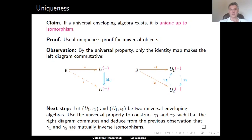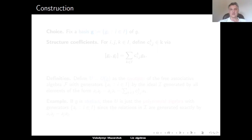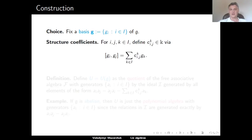Now we know that if a universal enveloping algebra exists, it must be unique. Let us construct a universal enveloping algebra of G. To do this, we need to choose a basis of G. When we have a basis, we can speak about the structure coefficients of the Lie bracket with respect to this basis. Given any pair of basis elements, we can consider their Lie bracket, which is a new element of G and can be written as a linear combination of basis elements. We denote by C_{ijk} the coefficients in this linear combination.